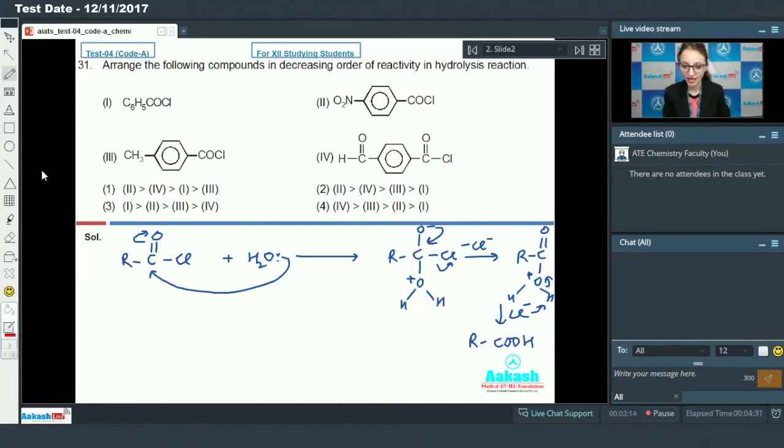Cl minus extracts hydrogen and formation of acid takes place. Now these are all acid chlorides. We know that electron withdrawing group increases electron deficiency on this carbon. So the reactivity order is nitro compound ki sab se zyada, then fourth because nitro is minus M group. CHO is also minus M group, but nitro ka minus M ka order zyada hota hai.